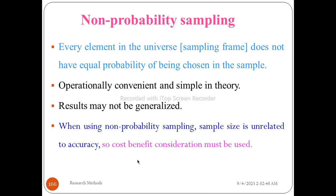We have our research on the probability sampling method. Every element in the universe or sampling frame has equal probability of being chosen in the sample. The probability sampling method in general is independent, with individual random and individual equal chance of being selected.